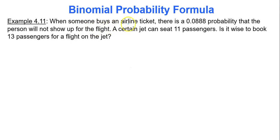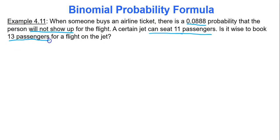In the example, when someone buys an airline ticket, there is a 0.0888 probability that the person will not show up for the flight. A certain jet can seat 11 passengers. Is it wise for the company to book 13 passengers for the flight? Because there is a chance that people won't show, but is it a high enough chance?